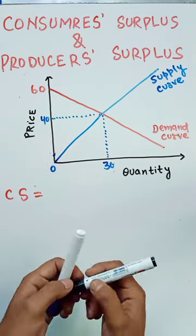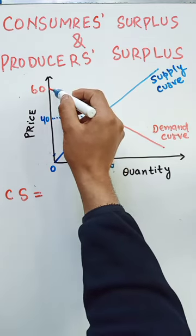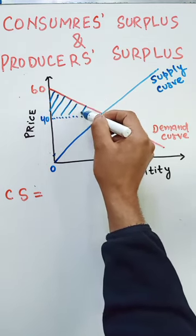We need to find out the consumer surplus first. Consumer surplus is simply the area which is above the equilibrium price and below the demand curve. That means the area of this very triangle denotes the consumer surplus.